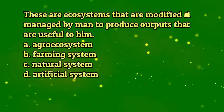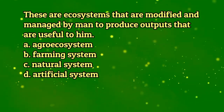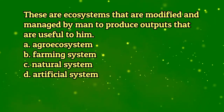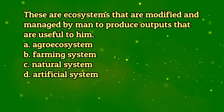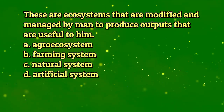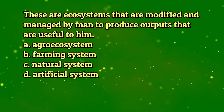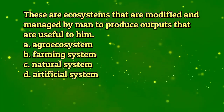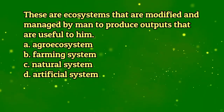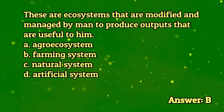These are ecosystems that are modified and managed by man to produce outputs that are useful to him. A. Agro-ecosystem. B. Farming system. C. Natural system. D. Artificial system. The answer is letter B.